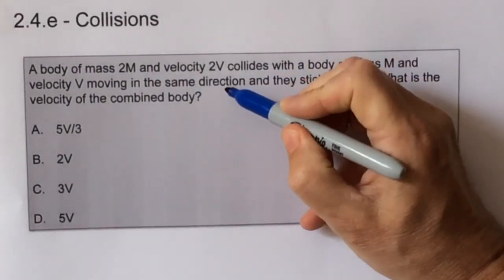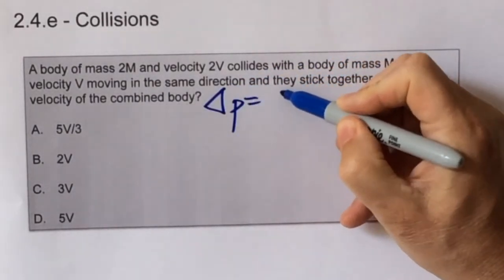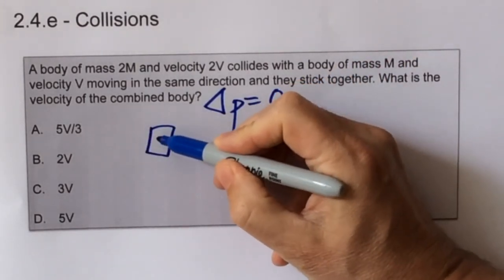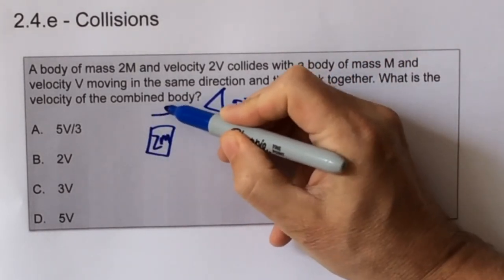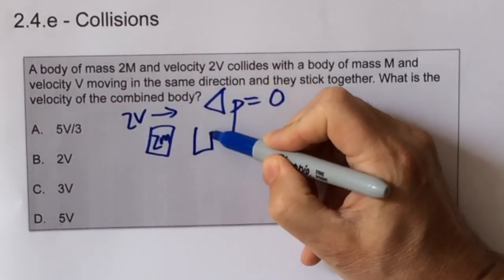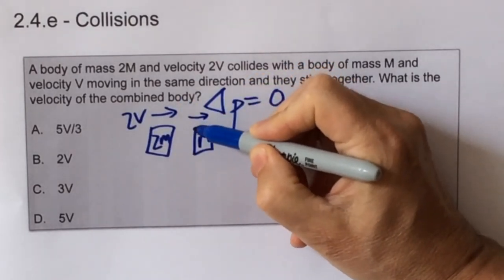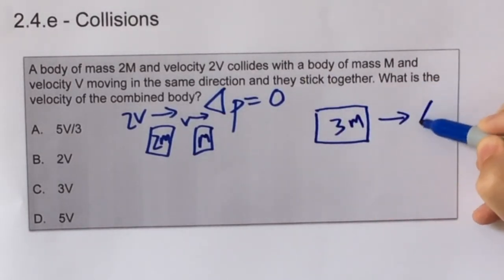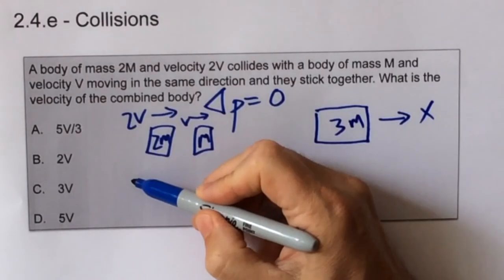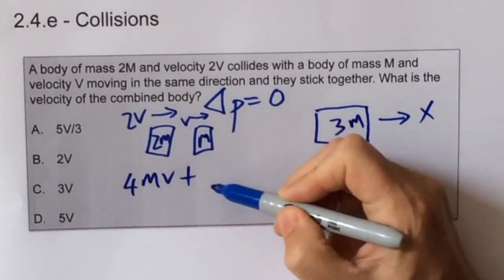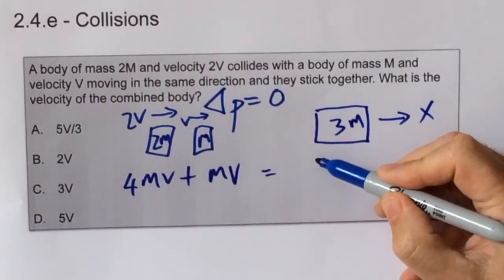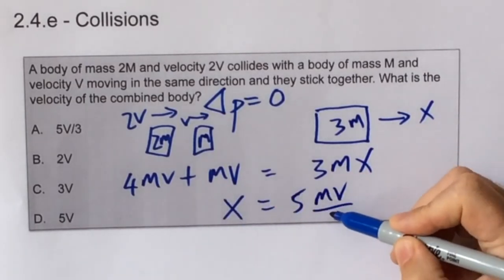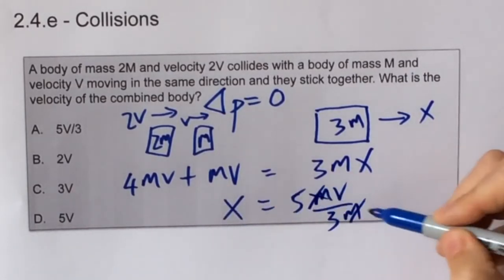The principle of conservation of momentum tells us that the change in momentum is zero. We write down the before and after data that we have: mass 2m velocity 2v, mass m velocity v to begin with. Afterwards it's a mass 3m, and we don't know what the velocity is. We equate 4mv plus mv to 3mx, and when we rearrange we find that x, the unknown velocity, is 5v divided by 3. Answer A.